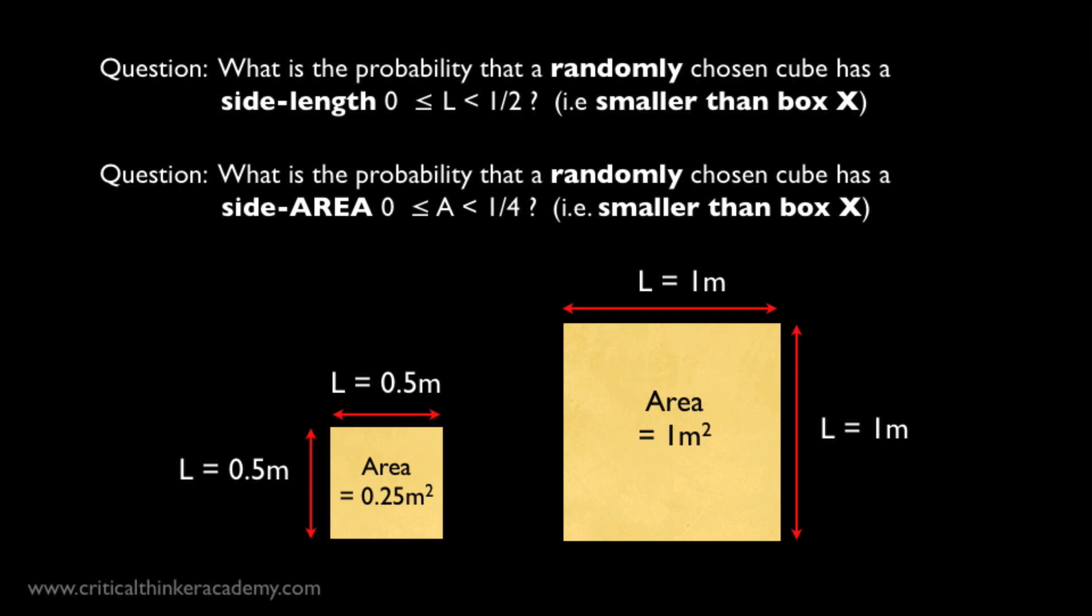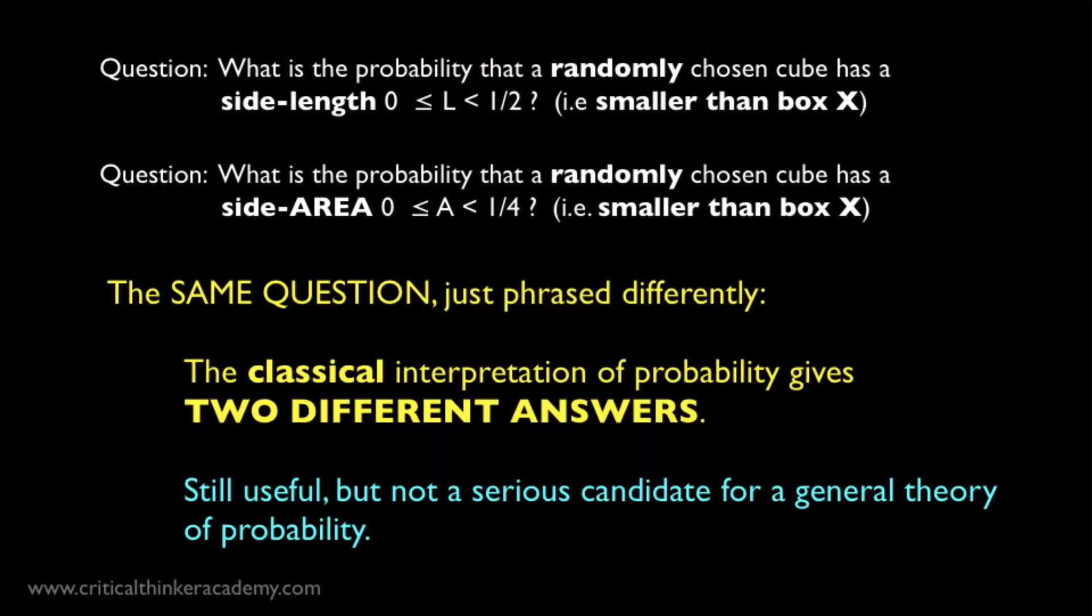Why? Because the cubes with a side length of 1 half are also the cubes with a face area of 1 quarter, since the area of the face is just 1 half times 1 half, which is a quarter, or 0.5 times 0.5, which is 0.25. So all the cubes that satisfy the first description also satisfy the second description. The events are just described differently. In other words, that box X is the same box in both cases. And here's the problem.